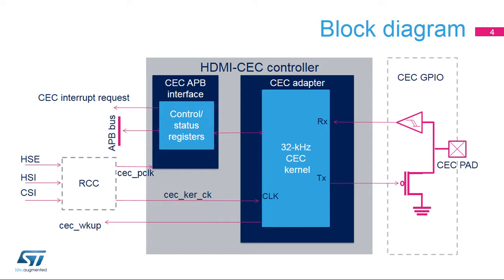Two clocks are available for the HDMI CEC controller: the APB clock (CEC PCLK) for the APB interface, and the 32 kHz kernel clock (CEC-KERCK) for the CEC adapter. The kernel clock can be derived from HSE, CSI, or HSI clock sources.